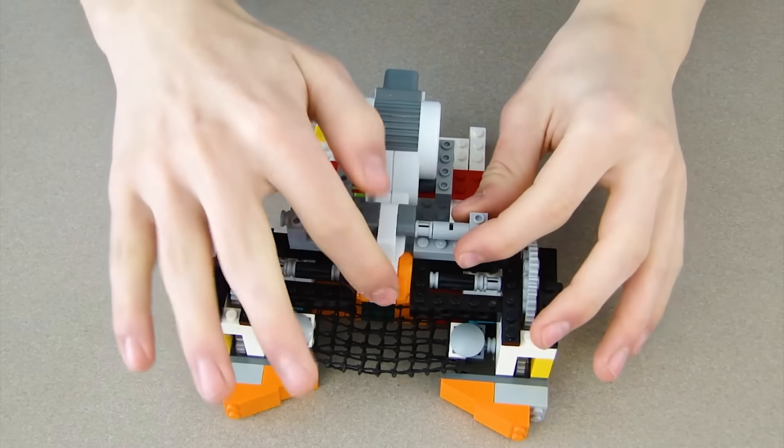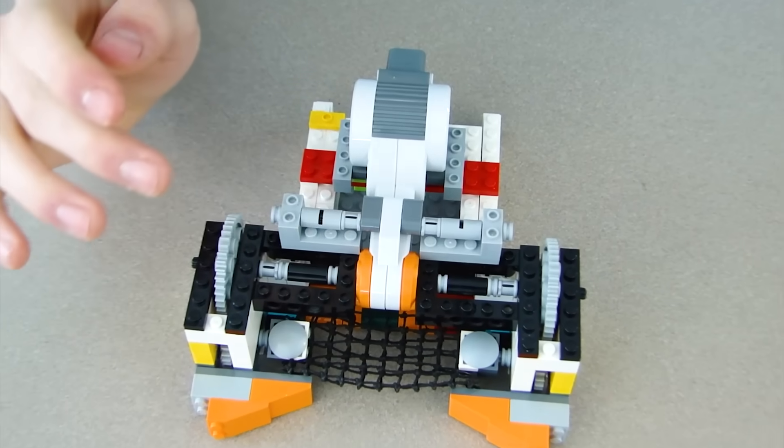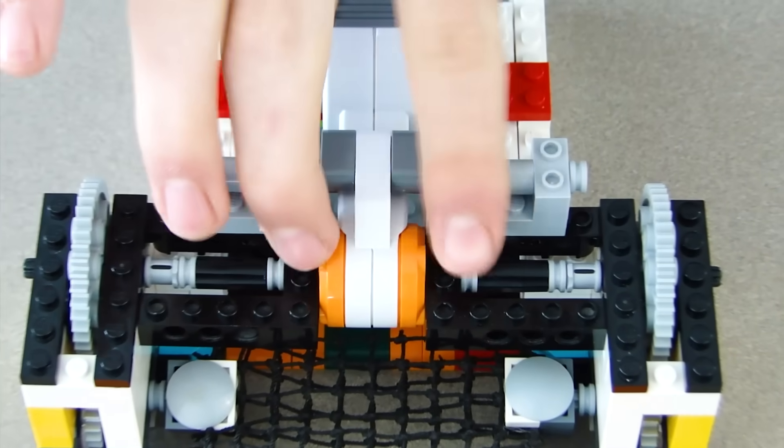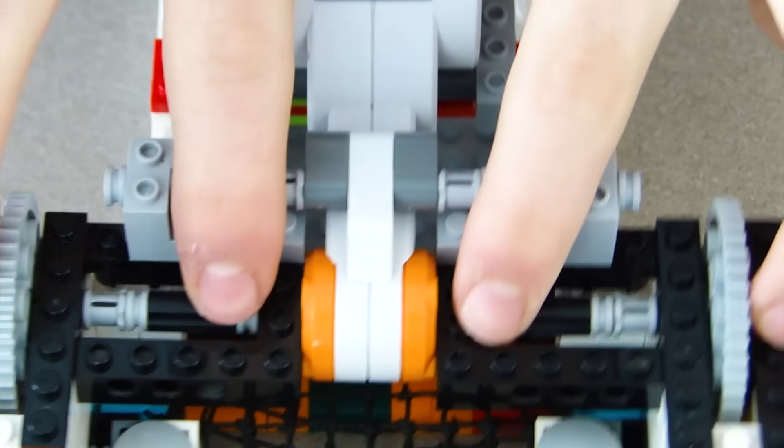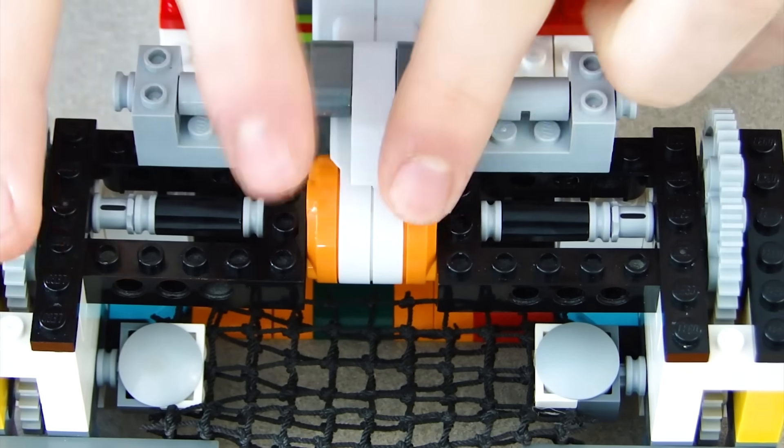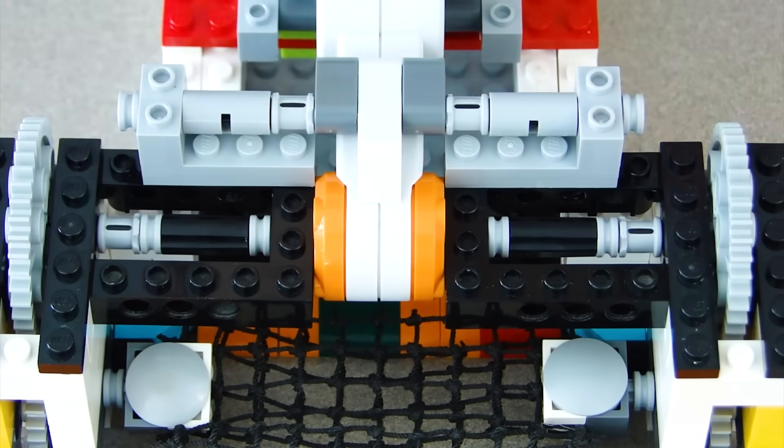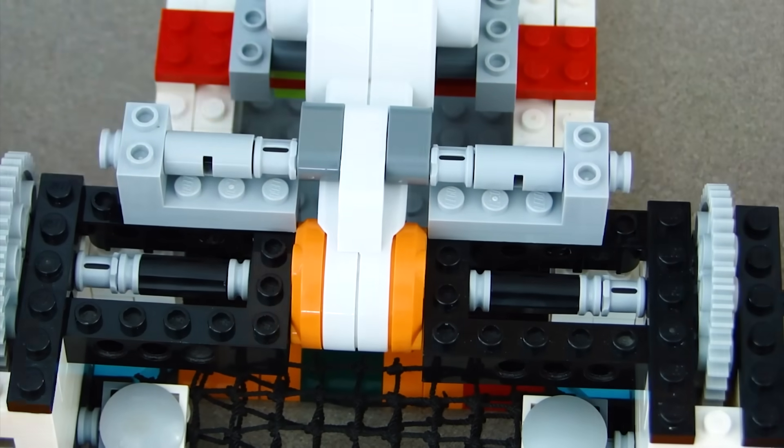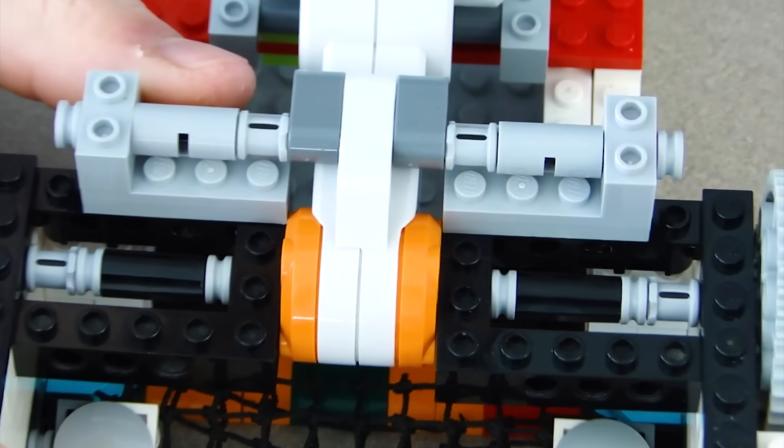So this build is actually completely uneven because of this motor right here. If we zoom in a little more this is three blocks wide and everything else isn't. So three blocks wide makes it so the entire build is three blocks wide. I could have made it so it's not like that. But I did so now I have to build everything uneven.